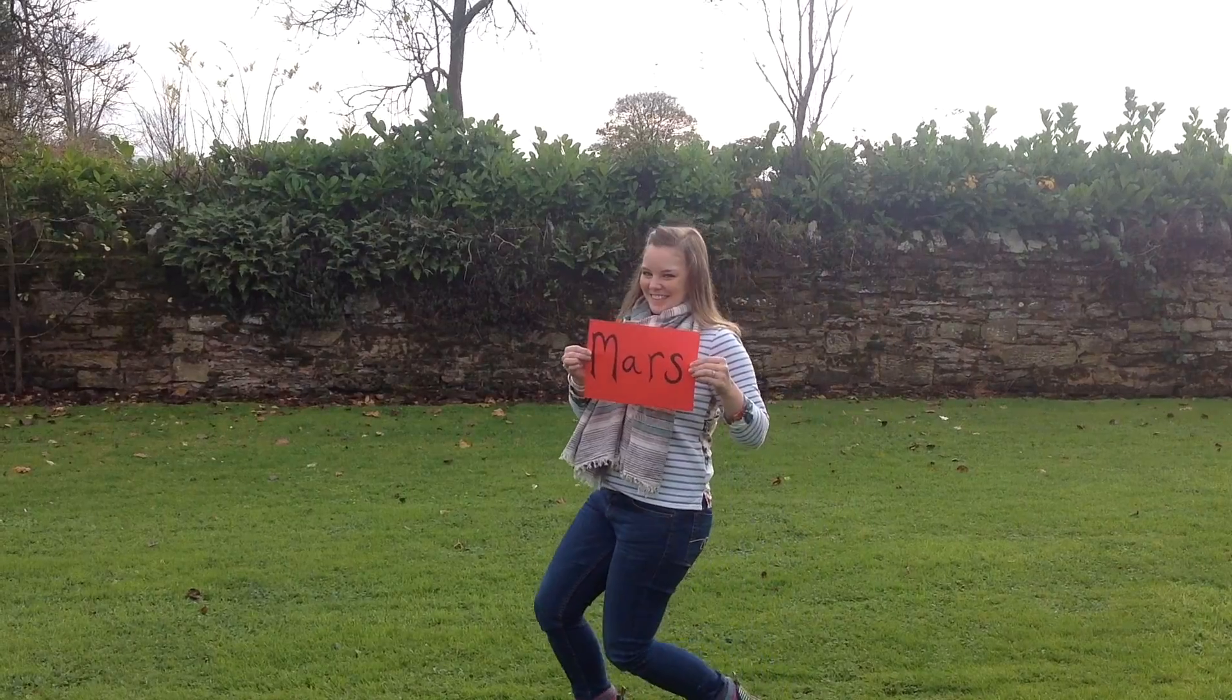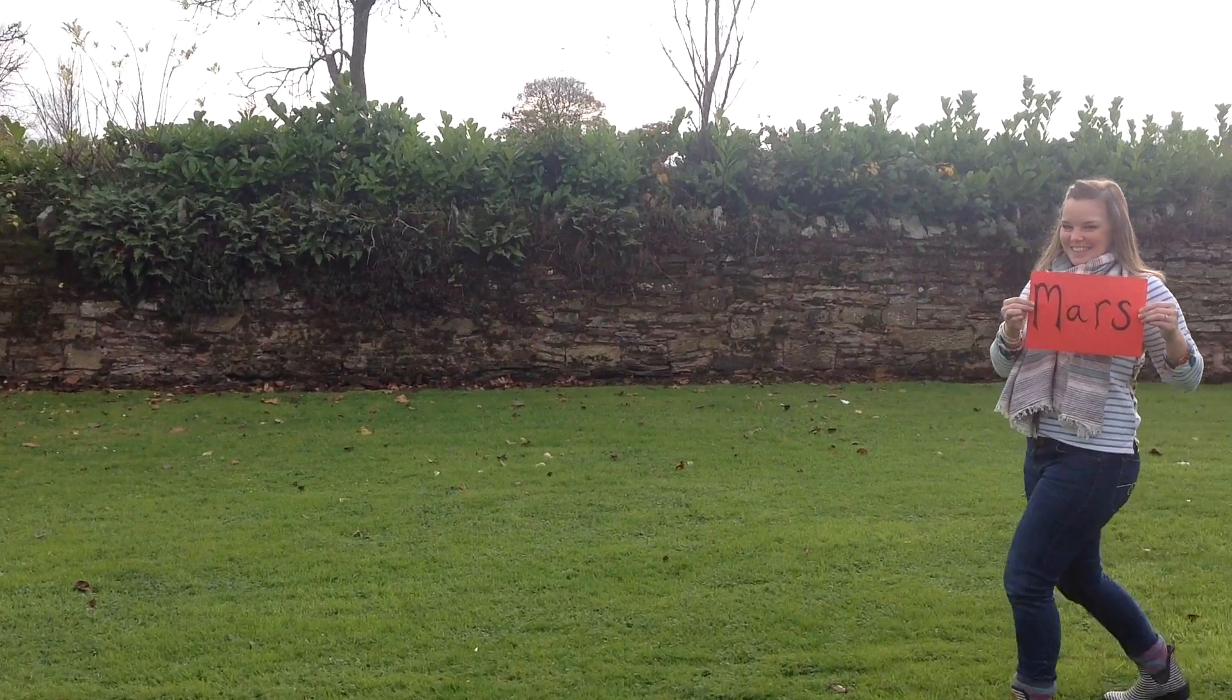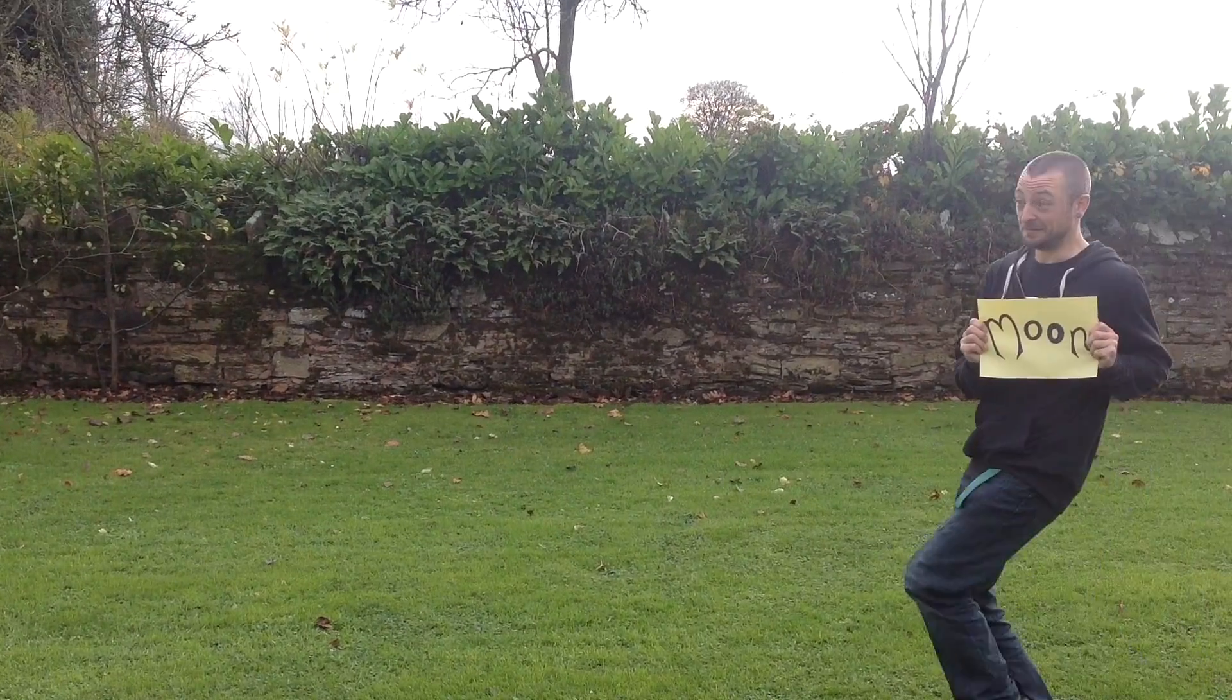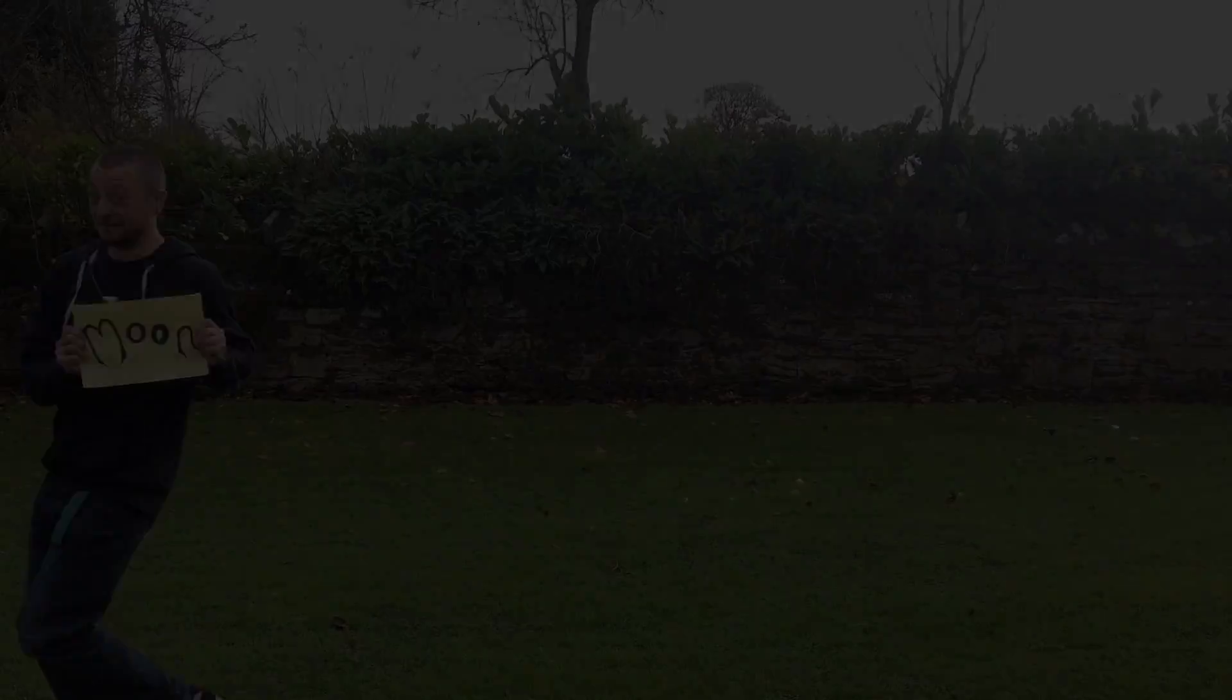Now we're going to look at why Mars has a movement like this, which can be different to other objects in the sky such as the moon with its relatively straight path.